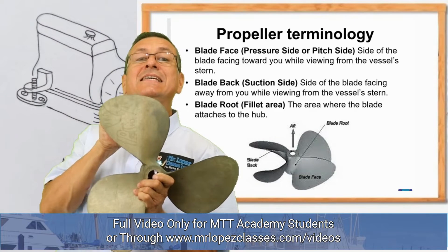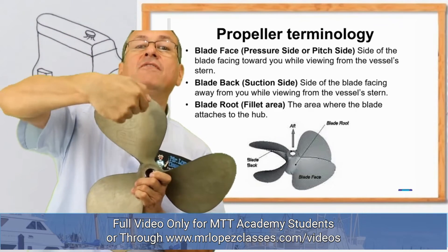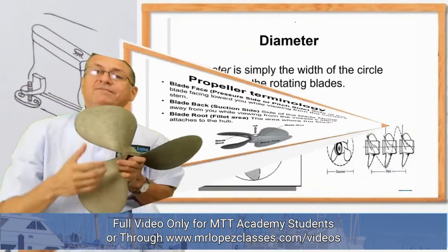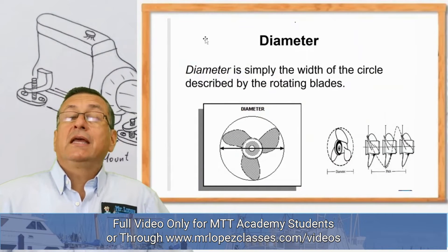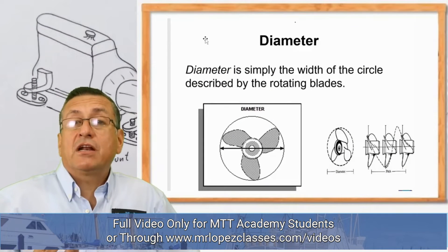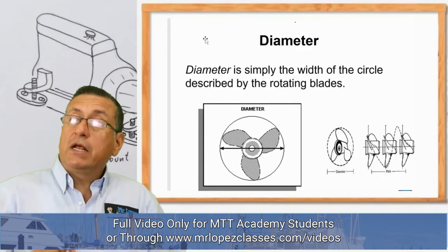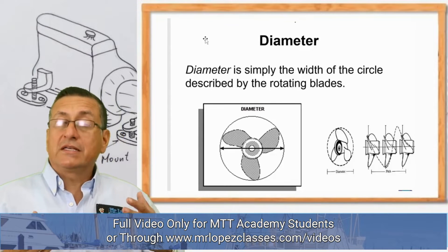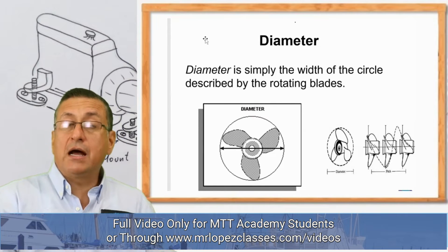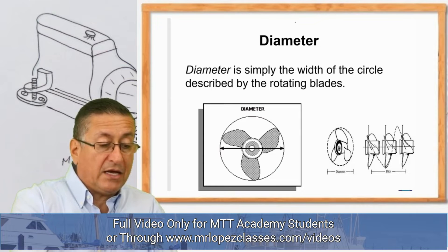The face of the blade is this side and the back of the blade is this side. Now we are going to calculate the diameter of the propeller in each particular case, and we are going to do an example about that situation.